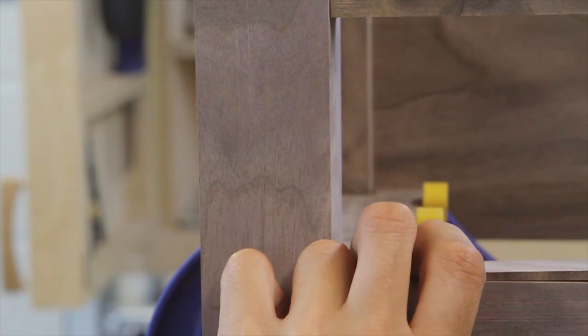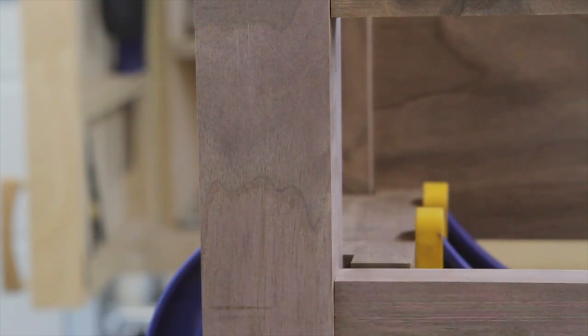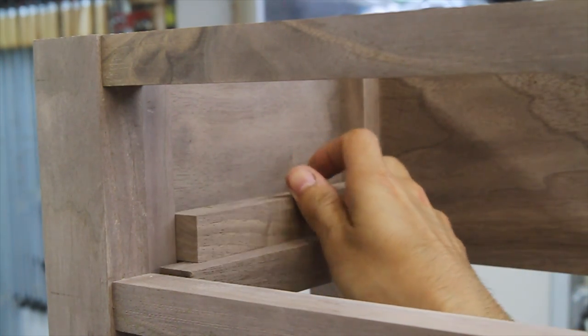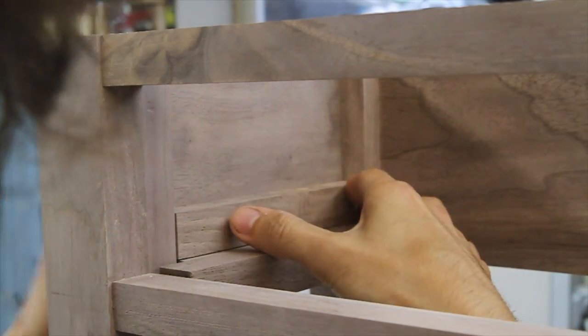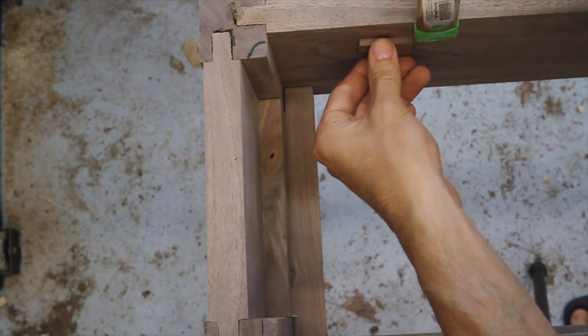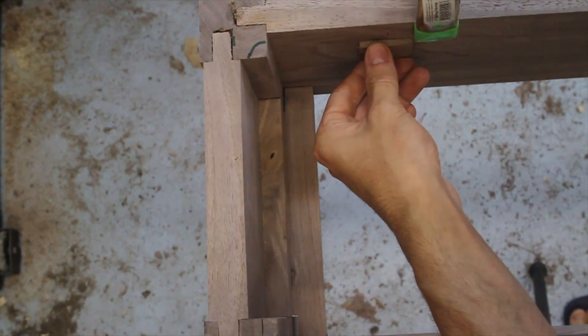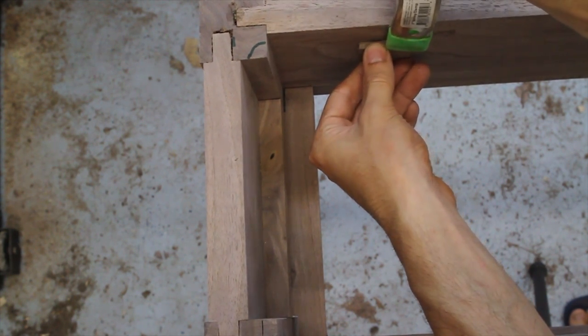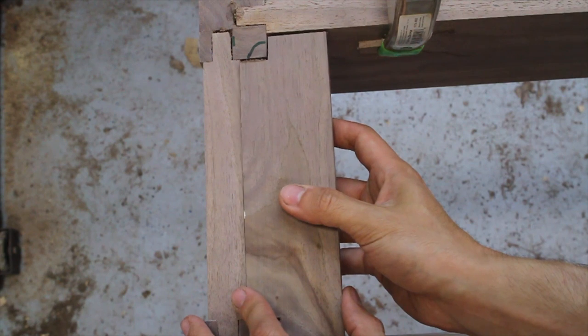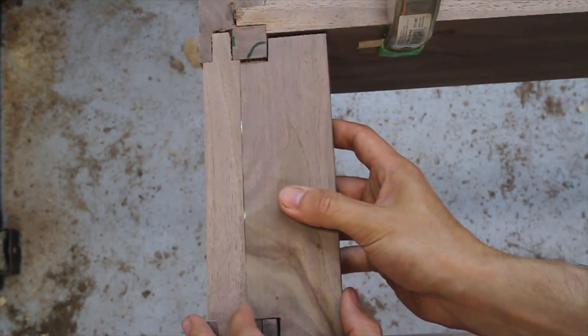Now I can start adding the parts that will complete the drawer compartment starting with the drawer runners. Next is the drawer guide. This fills the gap between the legs and sets the drawer location side to side. Next is the drawer stops. These are the correct thickness so that when the drawer contacts them the drawer front will be flush to the front rails. Lastly is the kicker. This prevents the drawer from tipping downward and will be used for attaching the top to the base.